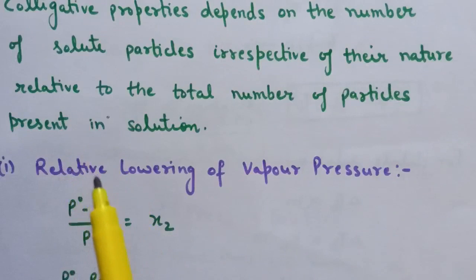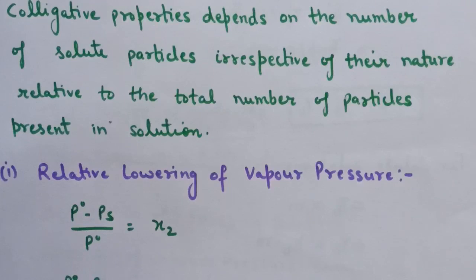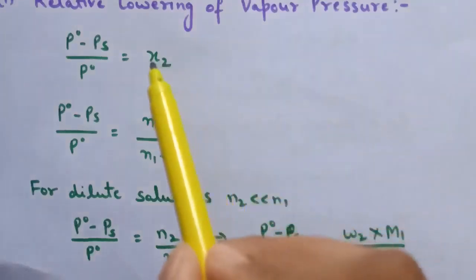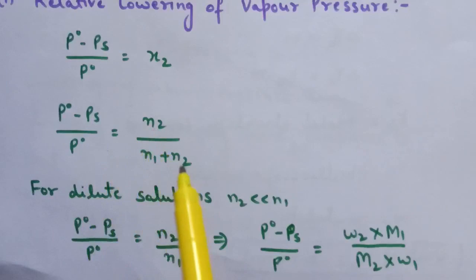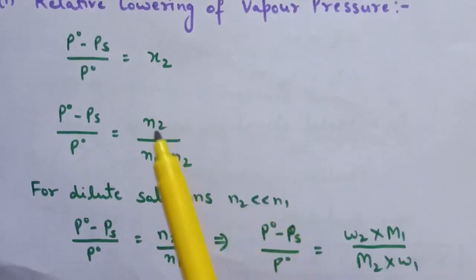We start with the first property: relative lowering of vapor pressure. As discussed in Lecture No. 1, the vapor pressure of a solvent in solution is less than that of pure solvent. Raoult's law established that the lowering of vapor pressure depends only on the concentration of solute particles and is independent of their identity. The expression for relative lowering in vapor pressure uses P0 for pure vapor pressure of solvent and Ps for vapor pressure of solution, where X2 is the mole fraction of solute. Writing the mole fraction expression gives: (P0 − Ps)/P0 = N2/(N1 + N2).